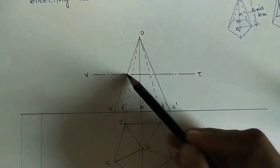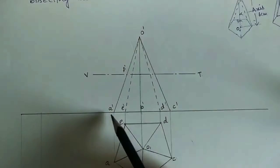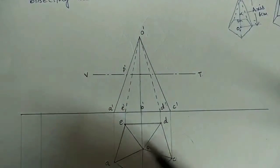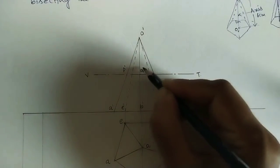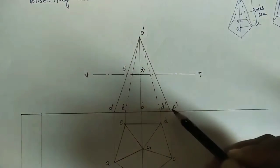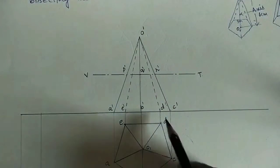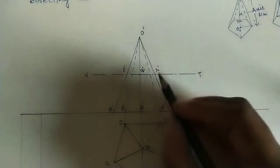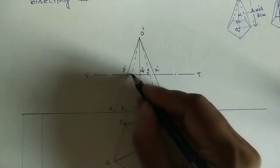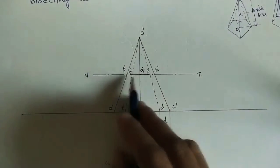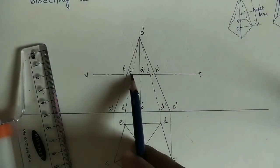The section plane cuts the slant edges at intersection points. It cuts edge O'-A' at point P', edge O'-B' at point Q', edge O'-C' at point R', edge O'-D' at point S', and the fifth edge at point T'. Mark all these intersection points where the section plane crosses the slant edges.